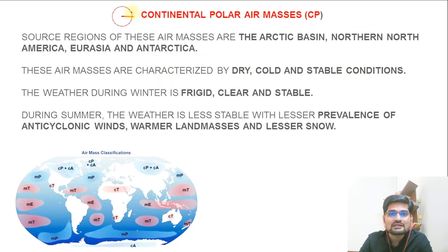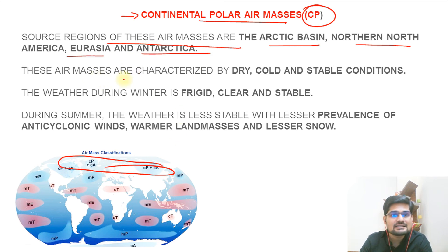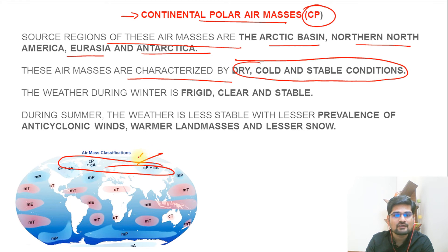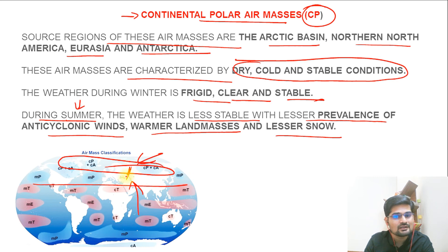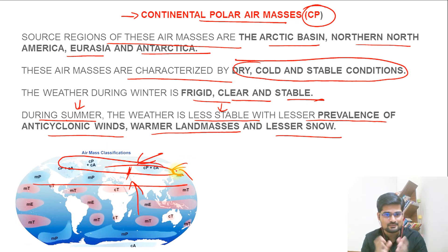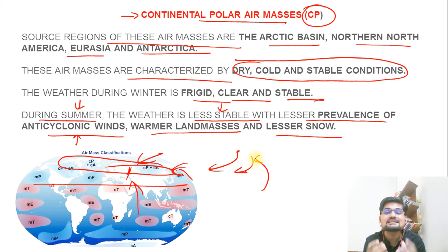The continental polar air mass: its source regions are the Arctic Basin, North America, Eurasia, and Antarctica. These air masses are characterized by dry, cold, and stable conditions — frigid air, clear and stable. During summer, the weather is less stable, with lesser prevalence of anticyclonic winds, warmer land masses, and lesser snow. When the sun shifts northwards and summer arrives, stability is reduced due to more energy flow and intermixing. The anticyclone becomes weaker, meaning wind comes inside — so continental polar air masses are of lesser strength during summer.